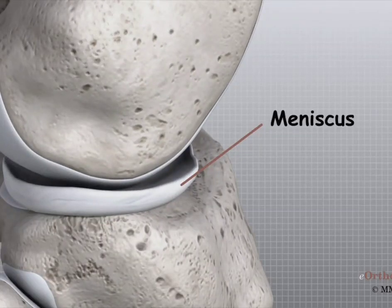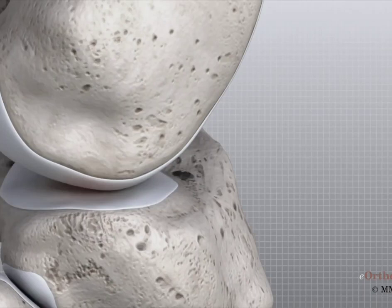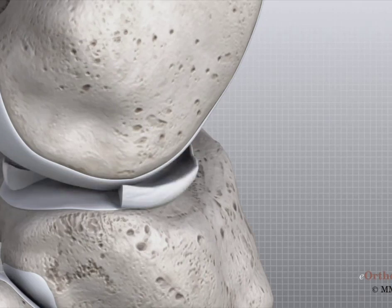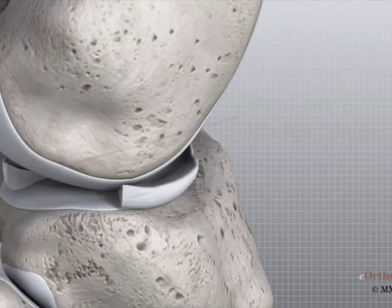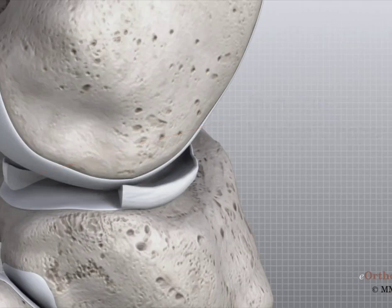Weight distribution by the menisci is important because it protects the articular cartilage on the ends of the bones from excessive forces. Without the menisci, the concentration of force into a small area on the articular cartilage can damage the surface, leading to degeneration over time. In addition to protecting the articular cartilage, the menisci help the ligaments with stability of the knee. The menisci make the knee joint more stable by acting like a wedge set against the bottom of a car tire. They are thicker around the outside, and this thickness helps keep the round femur from rolling on the flat tibia, converting the tibial surface into a shallow socket that is more stable and more efficient at transmitting weight from the upper body.